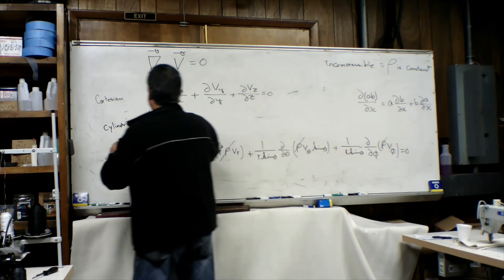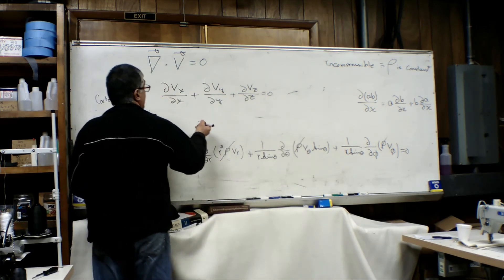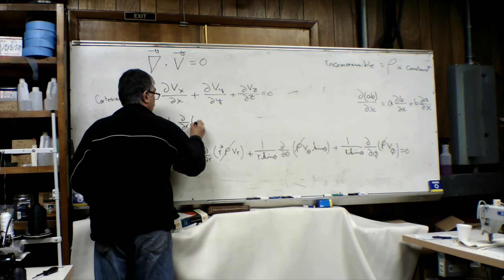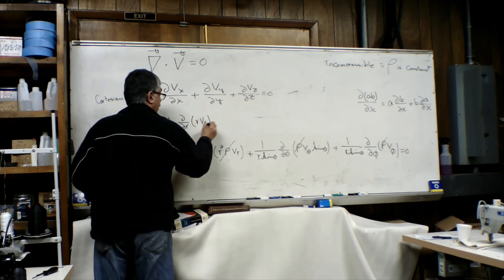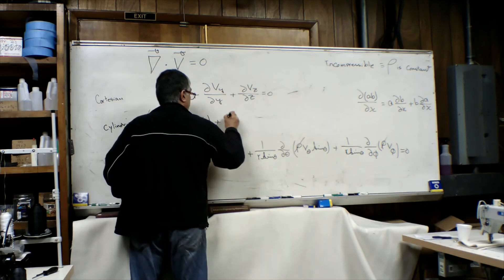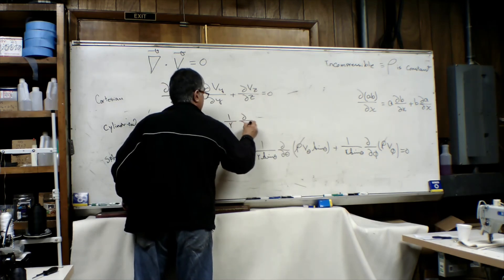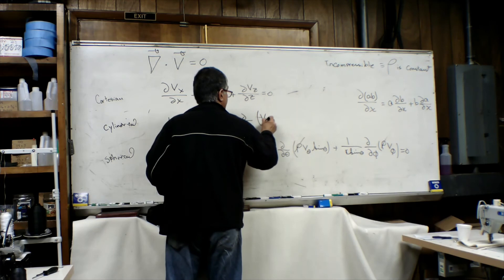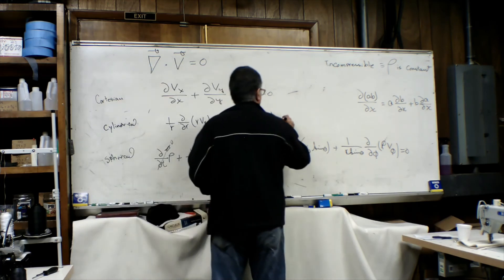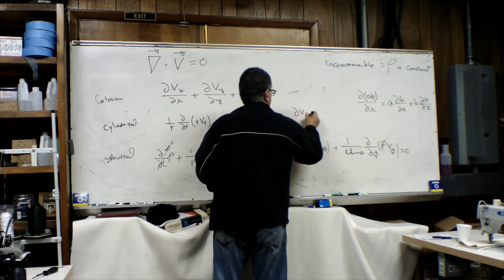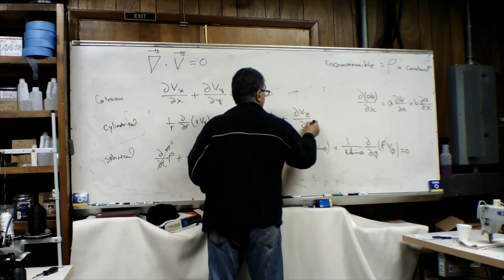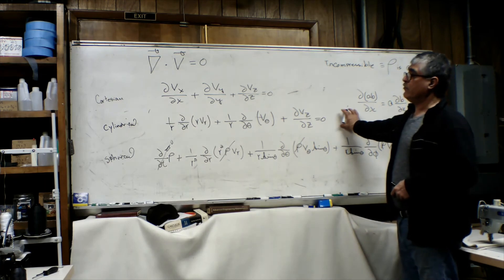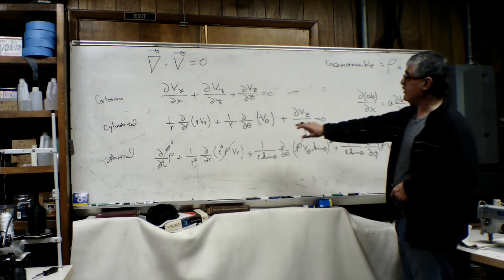And in cylindrical coordinates, the incompressible continuity equation is one over r times the partial derivative with respect to r of r times the velocity in the r direction, plus one over r times the partial derivative with respect to theta of the velocity in the theta direction, plus the partial derivative of velocity in the z direction with respect to z, equal to zero. This is our continuity equation in cylindrical coordinates for the incompressible fluid.